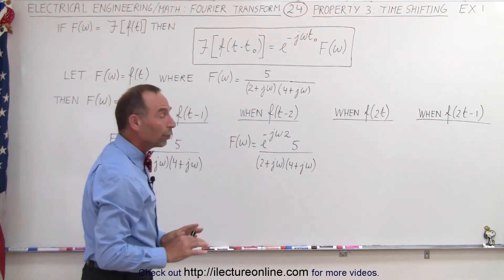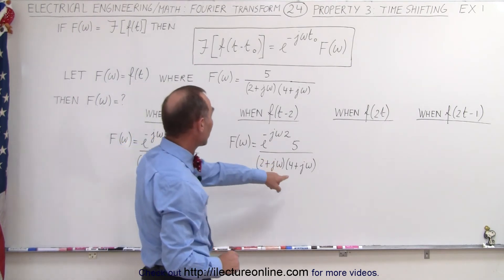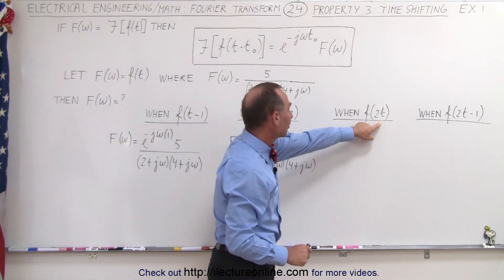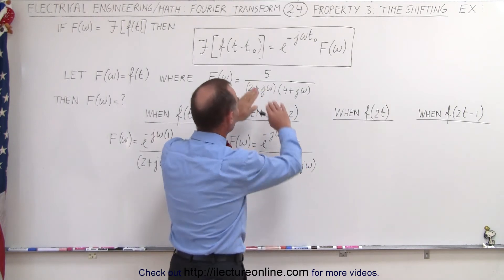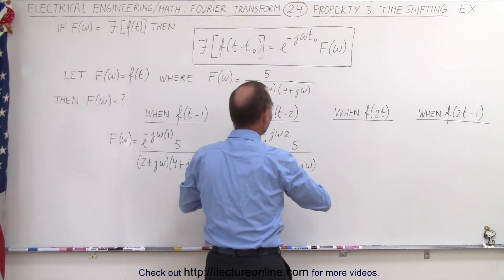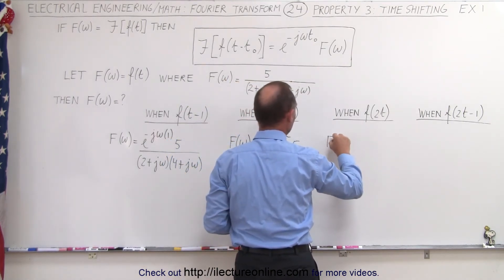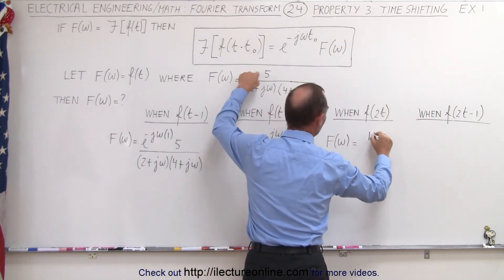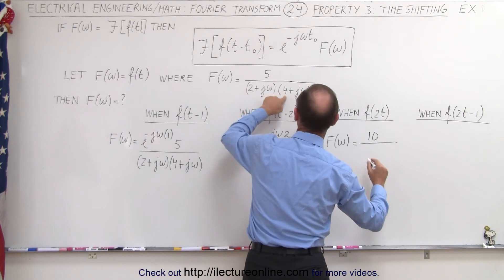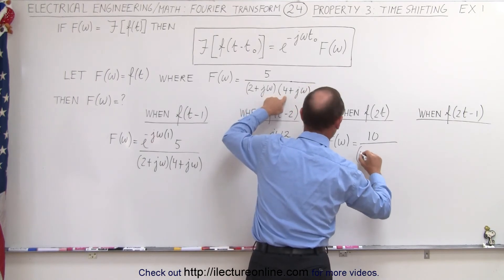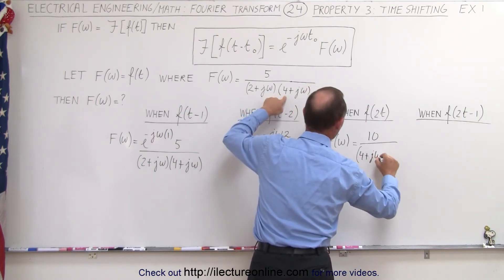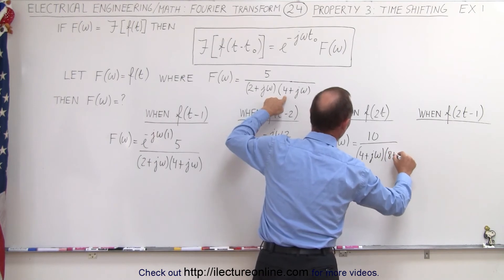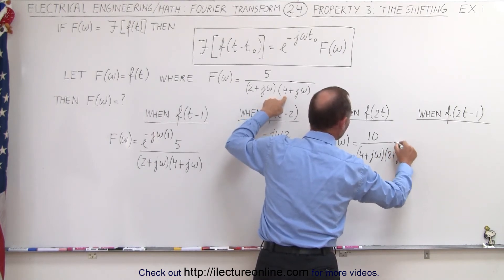So now we're going to do the time scaling. So now what we have here is a time scaling and how that affects things. When we have it like this, that will effectively become the following: the Fourier transform of that will now be equal to double the numerator divided by, and each of these numbers will double as well, so this now becomes four plus j omega times eight plus j omega.